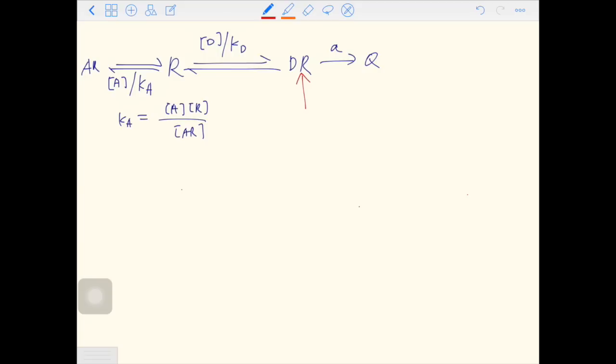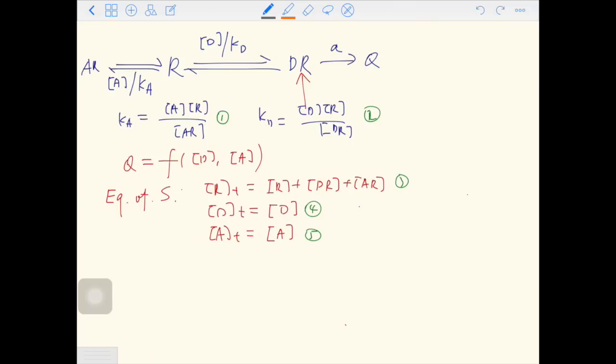So now we have the response Q, which is a function of both D and A. So both antagonist and agonist, but only agonist gives a response. We have three equations of state. We have Rt equals the free form plus the binding form DR plus the binding form AR. We have Dt. We assume it is the same as the free form. We have At. We assume it is the same as the free form of A.